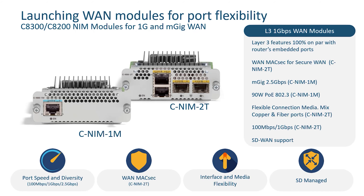We are excited to launch the brand new Cisco Gigabit Ethernet WAN modules that bring high-density SFP, SFP Plus, and copper RJ45 ports, supporting 1Gbps and multi-gig Ethernet WAN connectivity to Catalyst 8300 and 8200 platforms. As an evolution of the NIM and SMX Ethernet WAN modules on ISR 4K, these modules bring greater flexibility to customers to accelerate applications with high-speed and secure WAN MACsec connectivity options and ease of management with vManage SD-WAN support from day one.